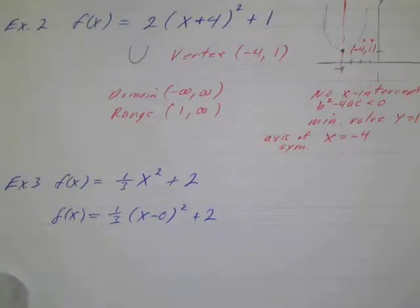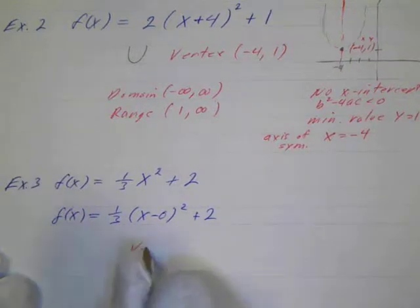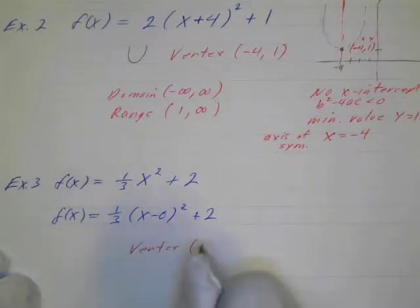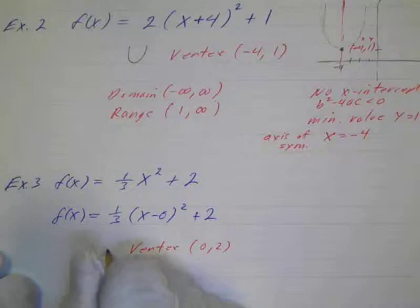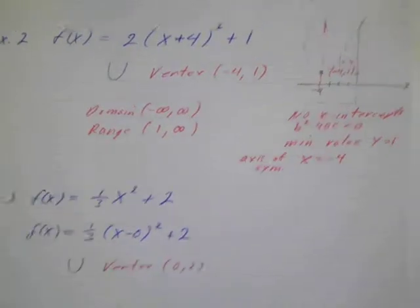So now we can identify that the vertex is going to be at the point 0, 2. It's going to be shaped like a U because this is positive. And then we can draw a quick sketch of it.